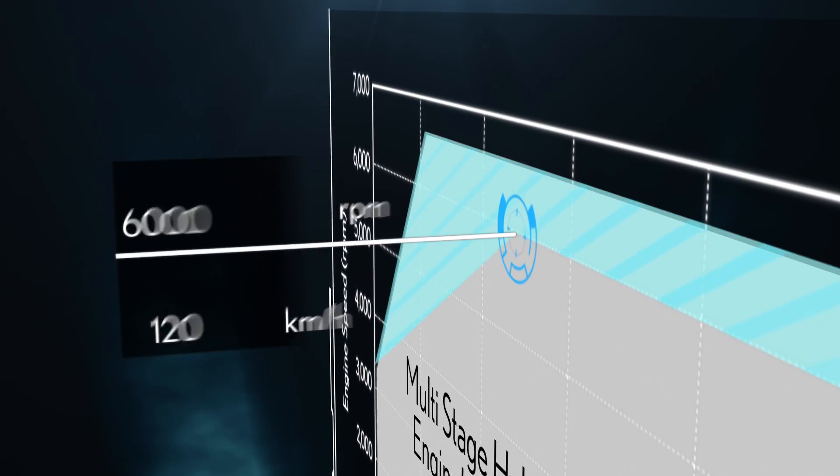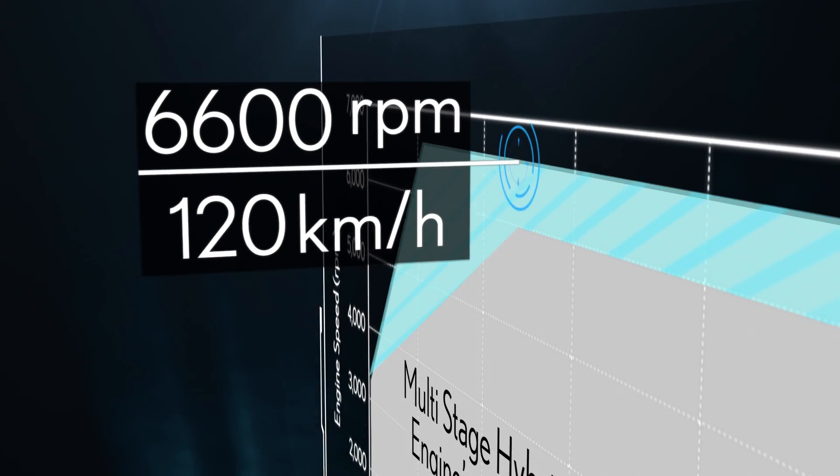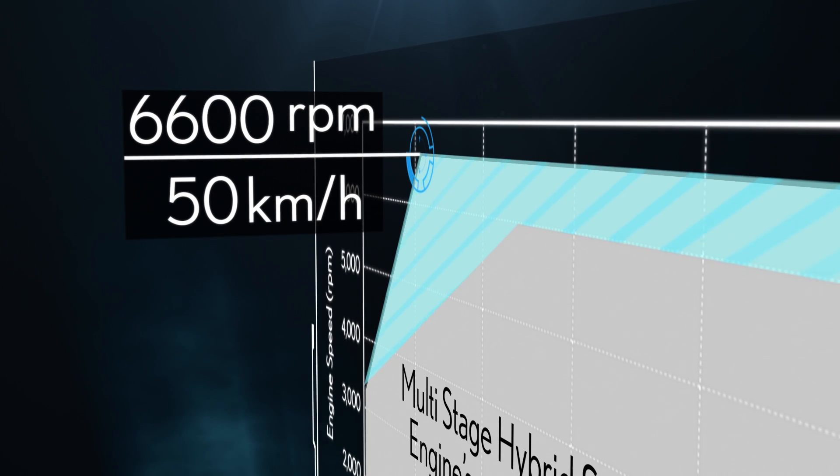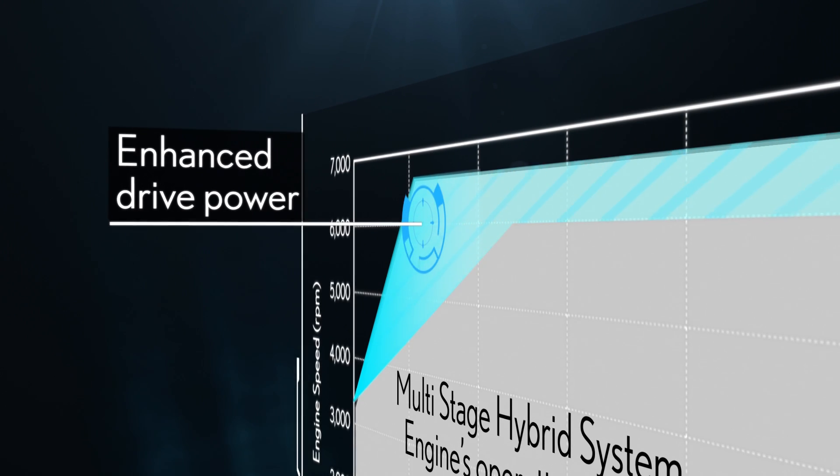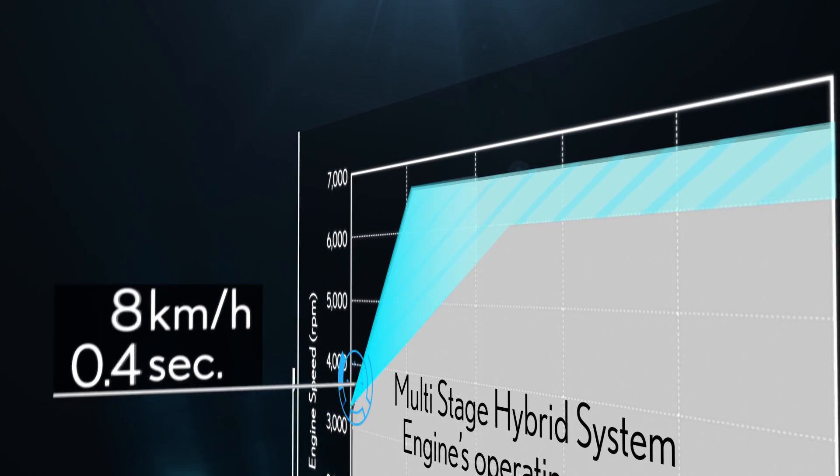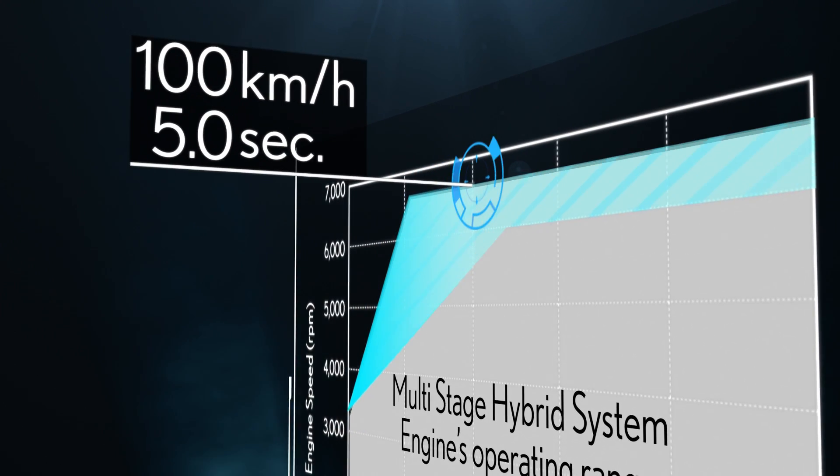Maximum engine output can be used from 50 km per hour, enhancing the performance of starting acceleration, which achieves 0 to 100 km per hour acceleration in 5.0 seconds.